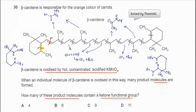When these two C=C double bonds break, these molecules will form. This carbon is bonded to two alkyl groups, so it will form a ketone here. This one will also form another ketone, and these carbons will form a carboxylic acid because it has one alkyl group and one hydrogen bonded to it. So most likely it will form this molecule.